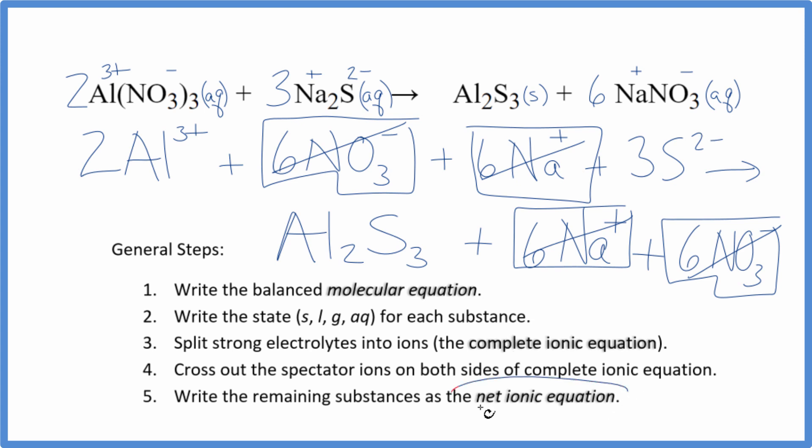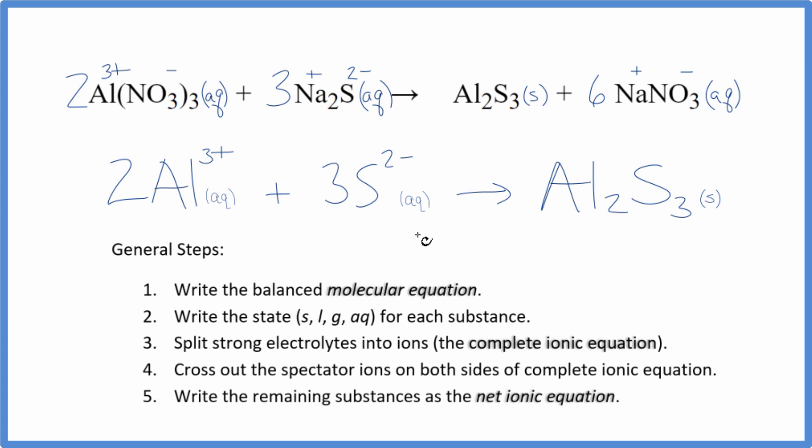But what's left, that's the net ionic equation for aluminum nitrate plus sodium sulfide. I'll clean it up, write the states. And this is the balanced net ionic equation for Al(NO3)3 plus Na2S. You can see that charge balances out. We have 2 times 3+, that's 6+. 3 times 2- is 6-. That adds up, gives us a net charge of zero. This is a neutral compound, net charge of zero.